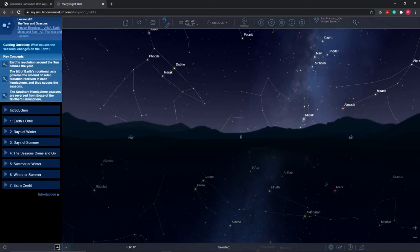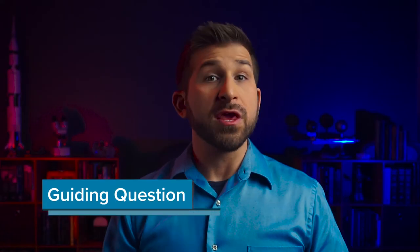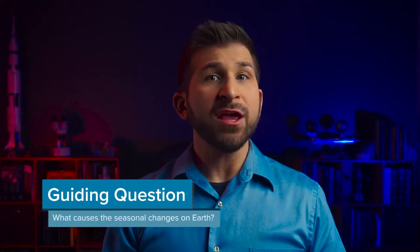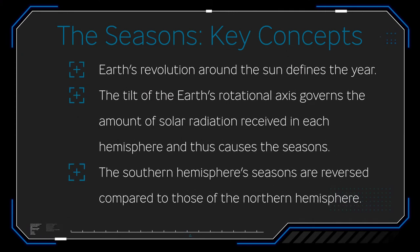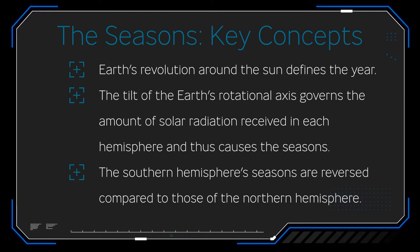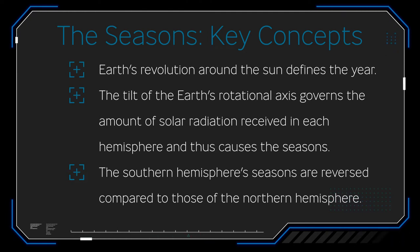Each lesson starts with a guiding question and several key concepts. For this lesson, the Year and the Seasons, the guiding question is: what causes the seasonal changes on Earth? The major key concepts are: Earth's revolution around the sun defines the year; the tilt of the Earth's rotational axis governs the amount of solar radiation received in each hemisphere and thus causes the seasons; and the Southern Hemisphere seasons are reversed compared to those of the Northern Hemisphere.